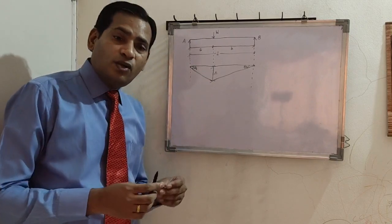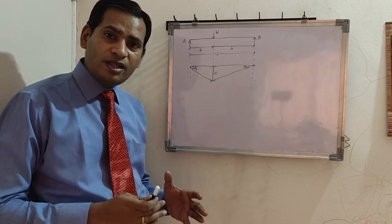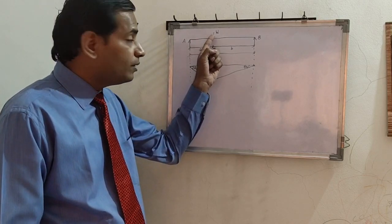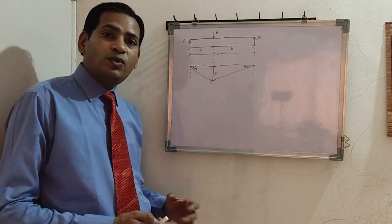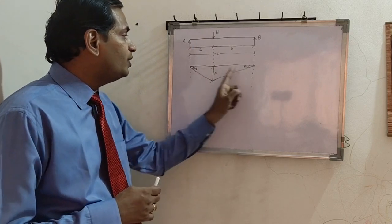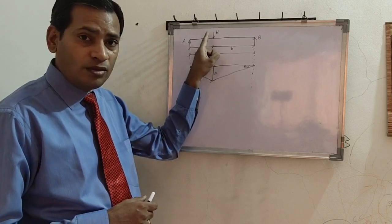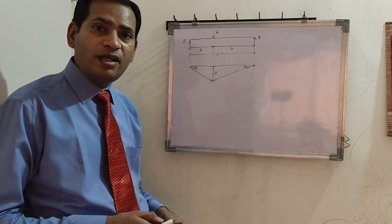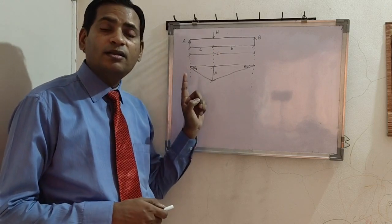The kinematic method follows the principle of virtual work energy: external work done is equal to internal work done. The external work done is W into delta. Internal work done involves the actions induced by the external loading — the rotations theta 1 and theta 2 correspond to moments, which in this case will be plastic moments. We need to identify where the plastic moment is maximum, which is obviously under the point load.